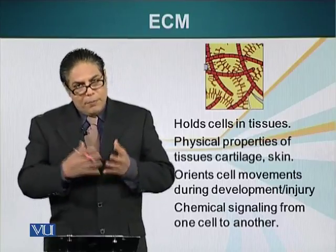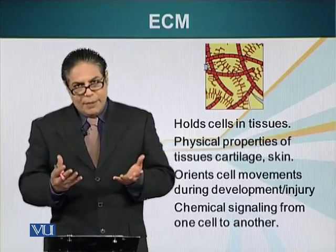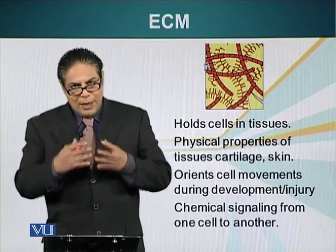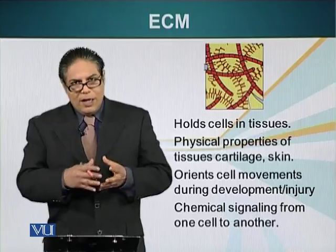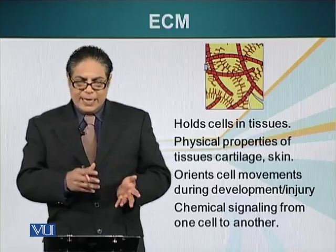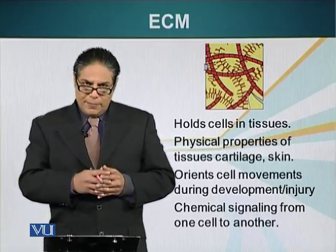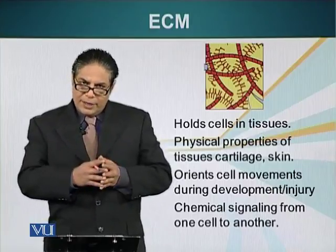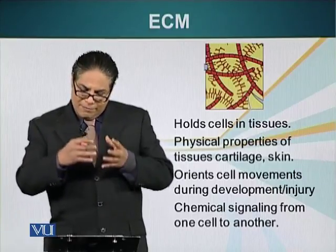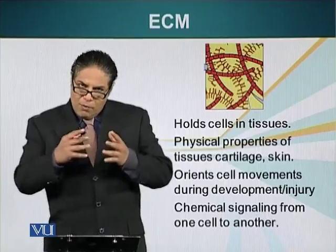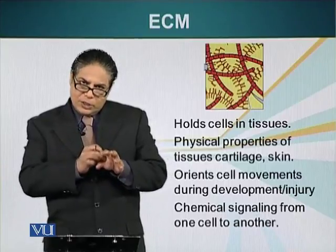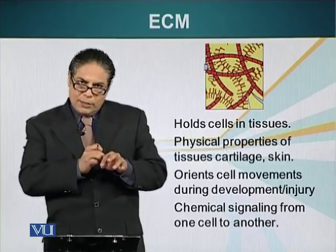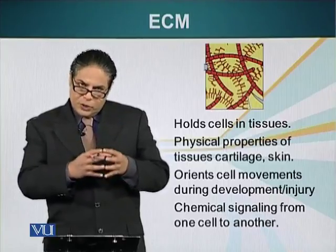For example, the brain has very little ECM. Bone, on the other hand, is primarily made of extracellular material — in this case, calcium phosphate. ECM or extracellular matrix can have several biological roles. For example, it holds the cells together. Our skin has a lot of collagen and it is holding the cells together.